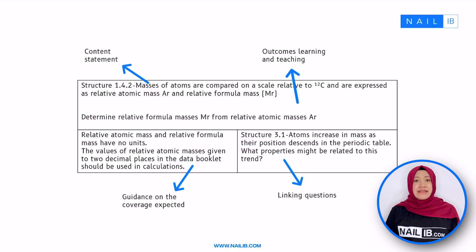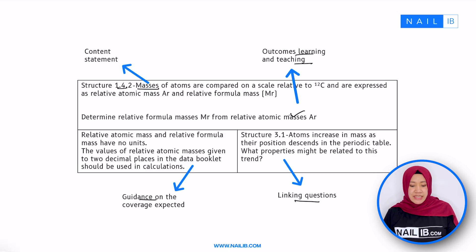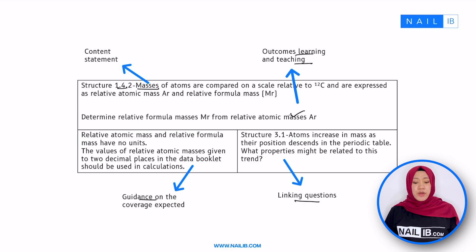This table can be found in the IB chemistry syllabus. As you can see, here is the content statement — the expectation for students to understand from these particular subtopics. And learning outcomes and teaching — this is the goal for students' knowledge or skills by the end of the lesson. Guidance on coverage expected is the recommendation on content depth. And linking questions — you can find one here, but there could be more than one for other subtopics. Linking questions are questions connected between the current material and other topics to promote critical thinking and discussion.